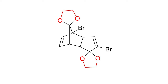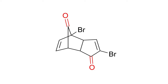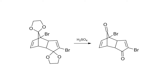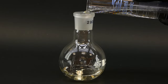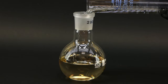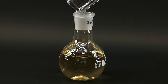It has two ketal groups that I installed in the first video — that's also why I call it the diketal — and now they have to go, because they would just make the next steps more difficult. To remove them and create the diketone, I have to use some concentrated sulfuric acid, and to start I poured 200 ml of 96% sulfuric acid drain cleaner into a flask with a stir bar.